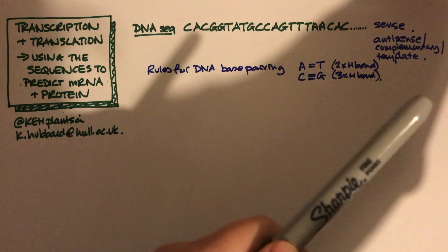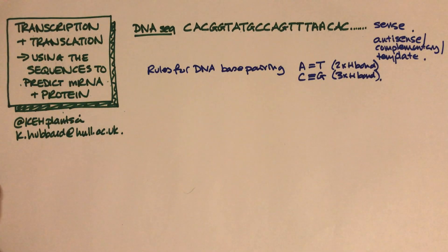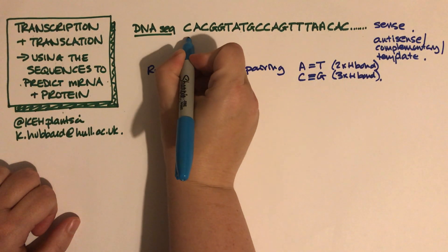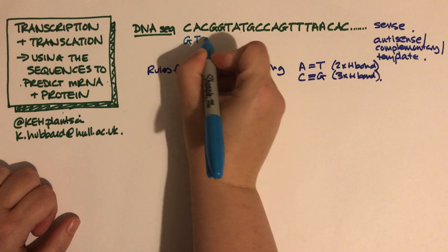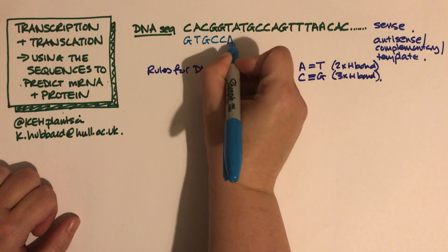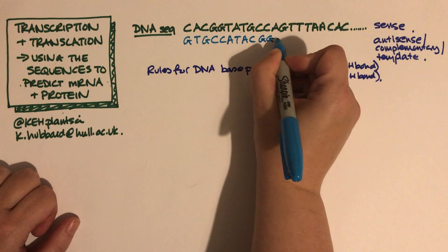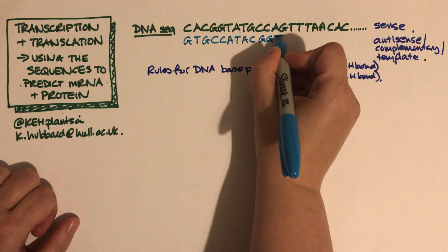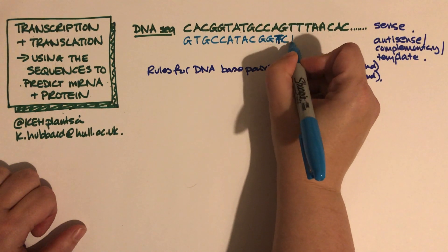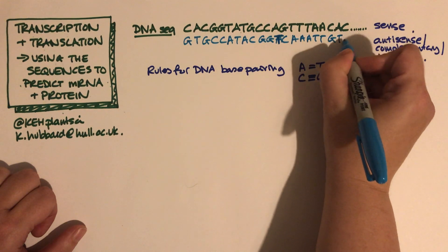So let me pick out another colour to work through this. If that's the sense strand, then the opposite antisense strand will be: C pairs with G, A pairs with T, C with G, G with C, C then A, T, A, C, G, G, T — and A pairs with T, not A — then C, G, T pairs with A, A, A, T, T, G, T, G.